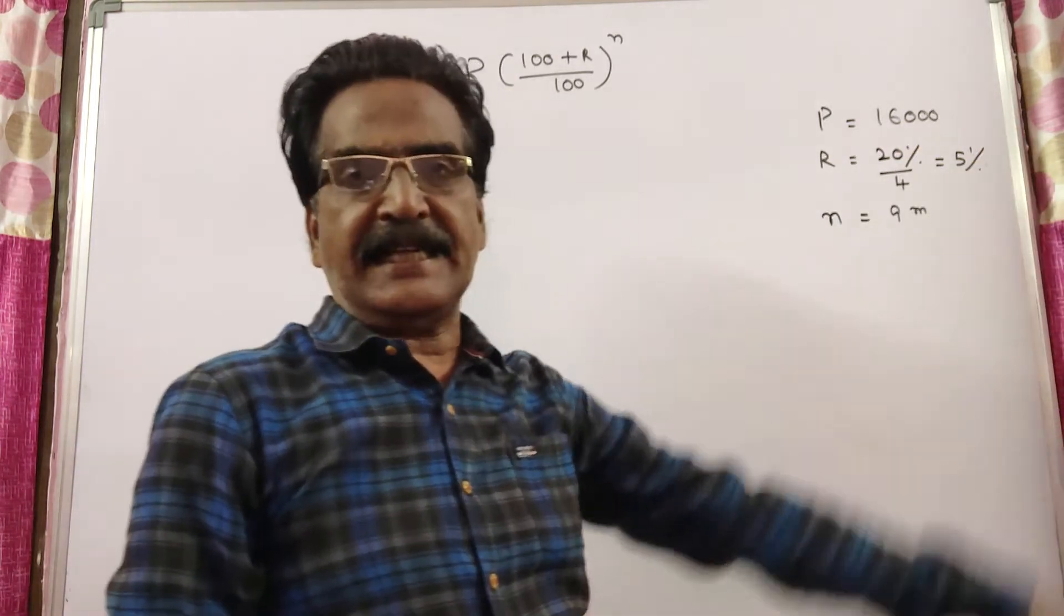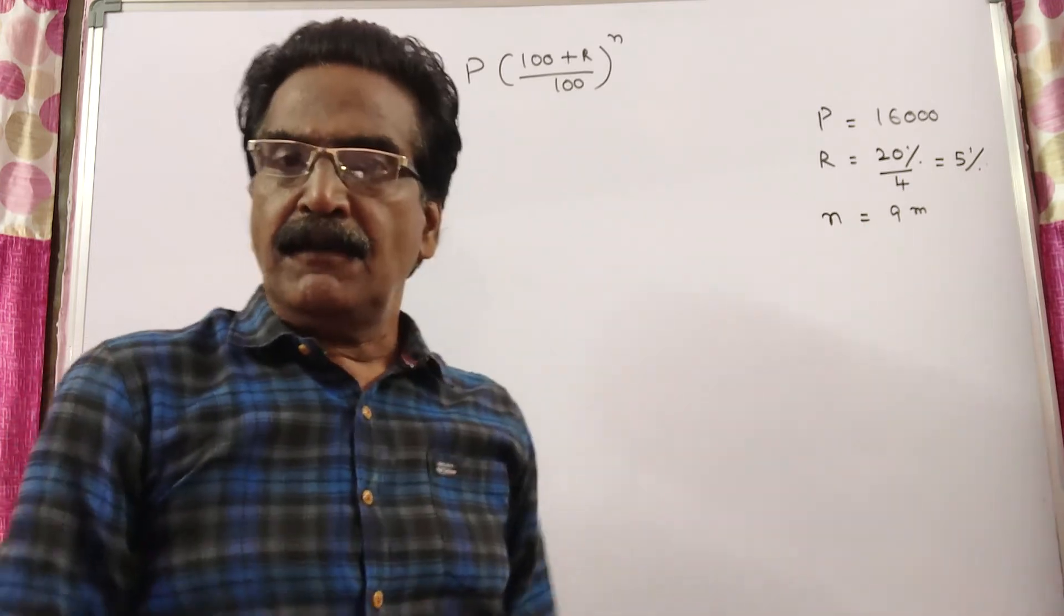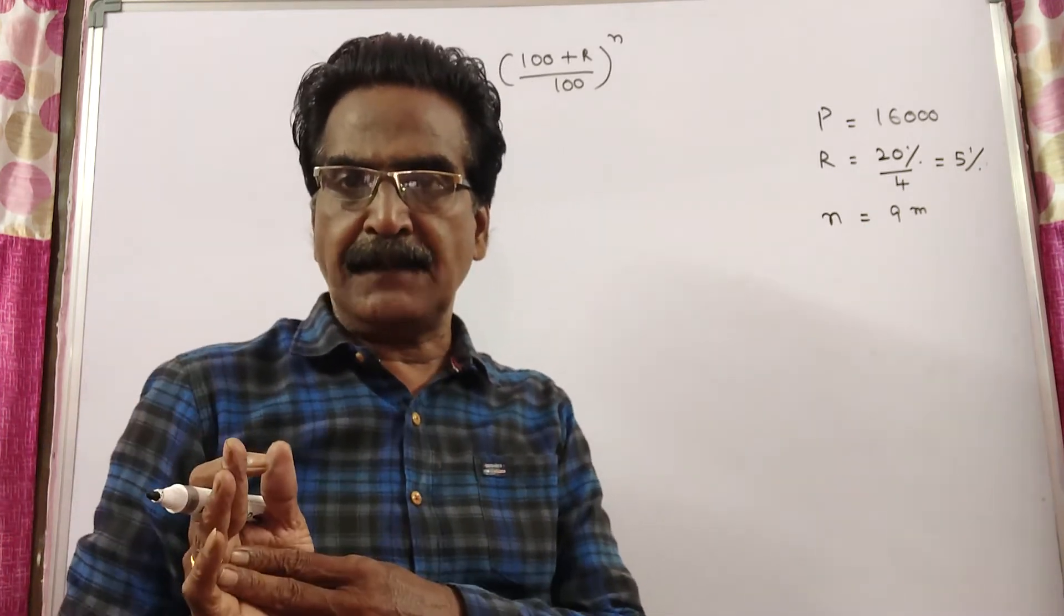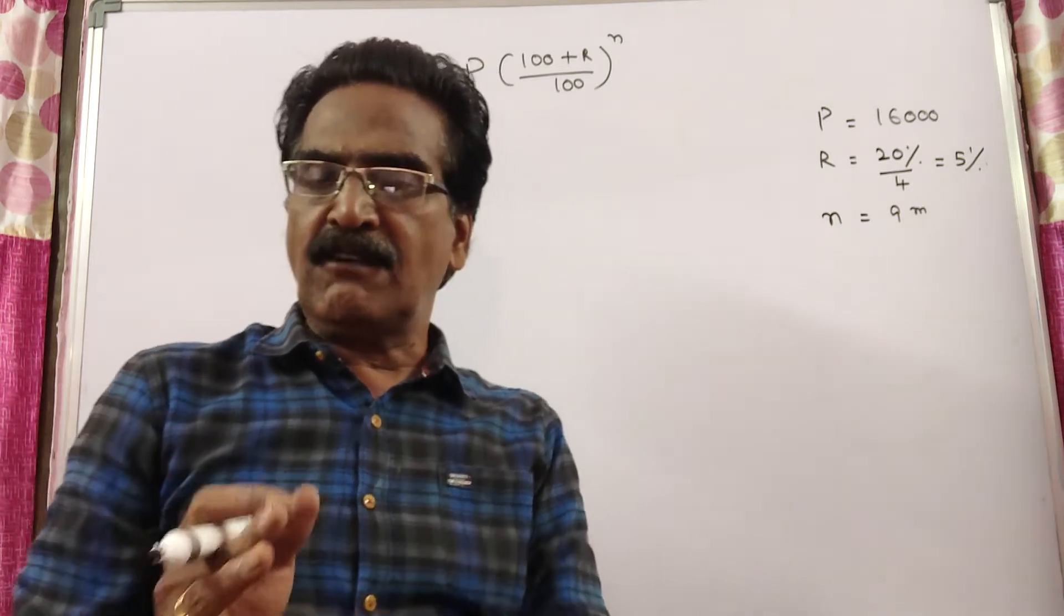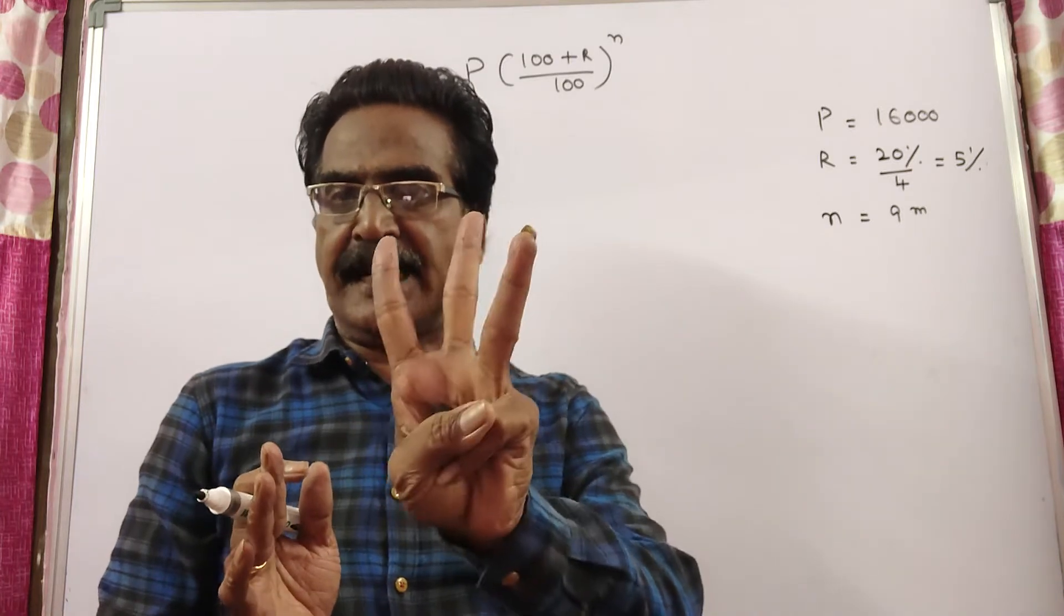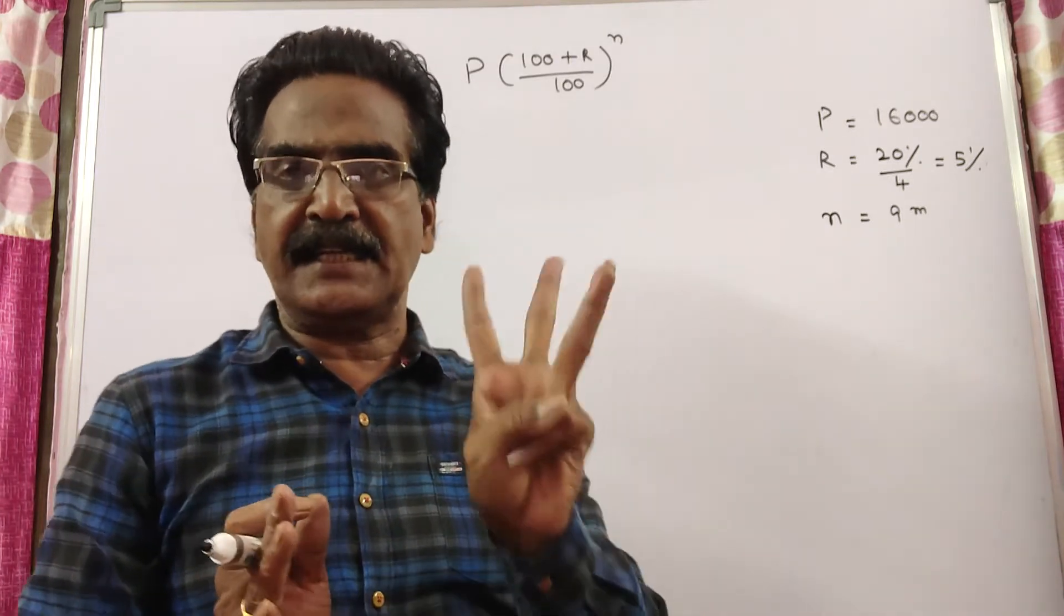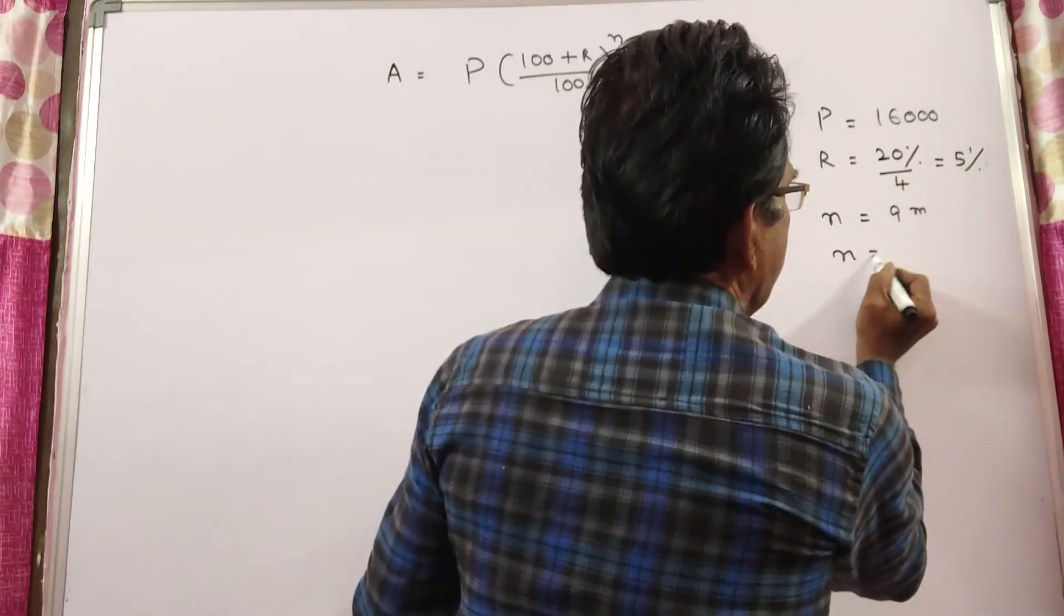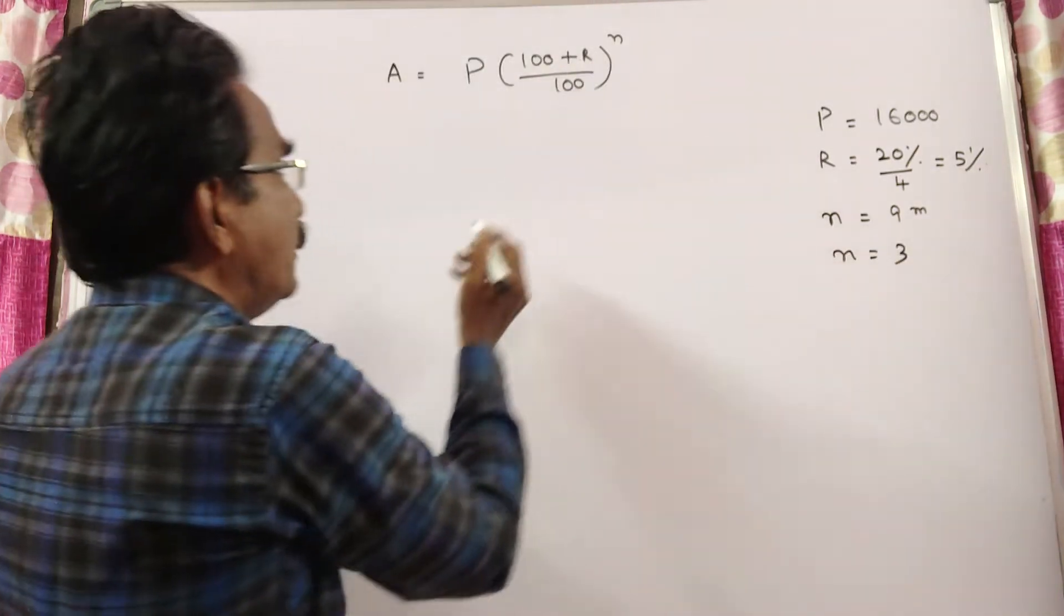So, 20 by 4 that is 5%. And coming to N, we have to find the interest for the period 9 months. It is quarterly compounded. How many quarters are there in 9 months? 3 quarters are there in 9 months. So, N must be taken as 3.